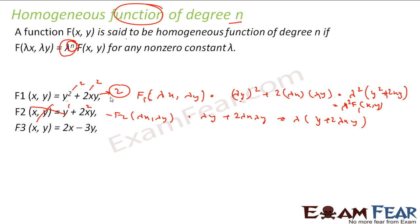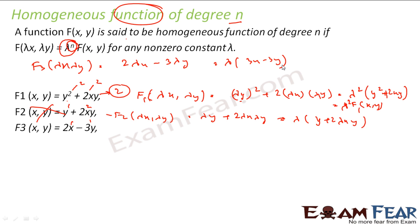Let's take another example: f₃(x, y) = 2x − 3y. Each term has power 1, so it should be homogeneous of degree 1. To confirm: f₃(λx, λy) = 2(λx) − 3(λy) = λ(2x − 3y) = λ · f₃(x, y). So f₃(λx, λy) = λ¹ · f₃(x, y), confirming this is a homogeneous function of degree 1.